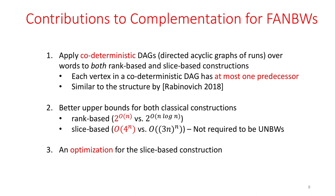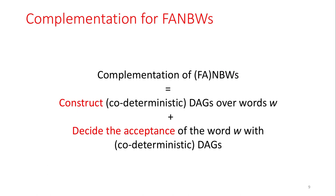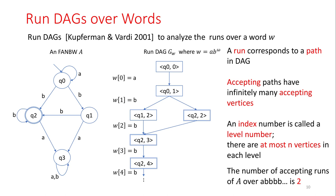Essentially, the complementation of finitely ambiguous Büchi Automata consists of two steps: first, construct a codeterministic DAG over the word, and then decide the acceptance of the word. These two steps also occur in the classical rank- and slice-based constructions, but their constructed DAGs may not be codeterministic. So let's first see how we construct a DAG. A run DAG is used to analyze the runs over a word w. For instance, if we want to construct a DAG over the word AB^ω from automaton A...